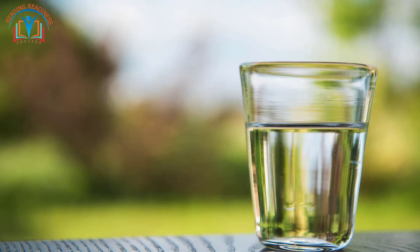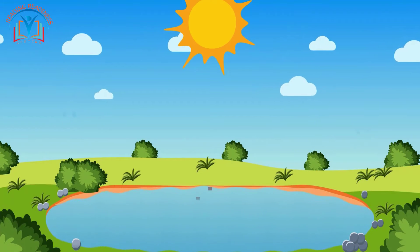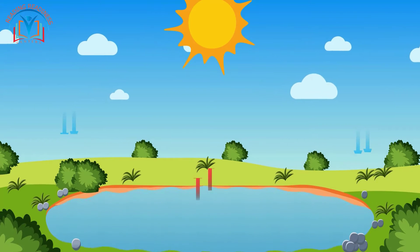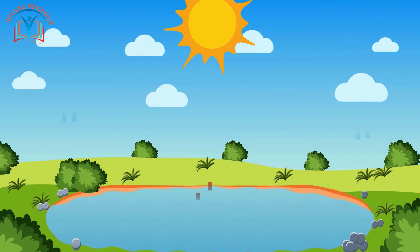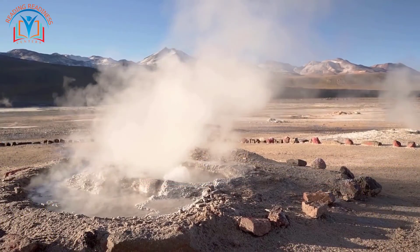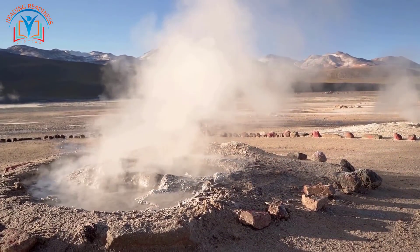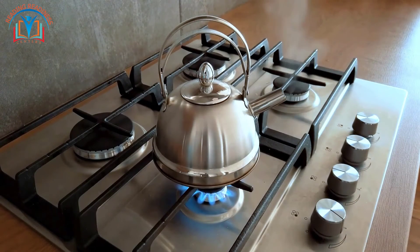Experiment three: evaporating water. What happens when we leave a cup of water outside? The water slowly disappears into the air. This is evaporation, where liquid water changes into gaseous water vapor. The heat from the sun provides the energy for this change, and now the water molecules are free to spread out and become part of the air around us.